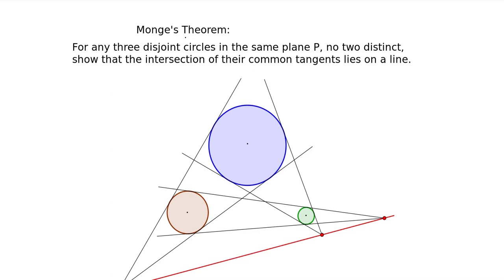Hello everybody, in this video we're going to be proving Monge's Theorem, which states that for any three disjoint circles, they don't intersect, in the same plane P.